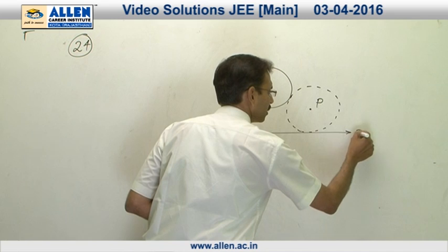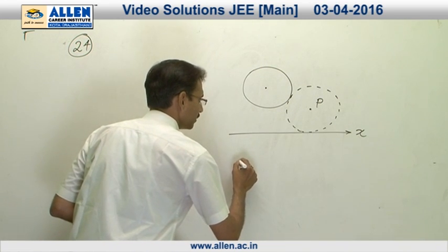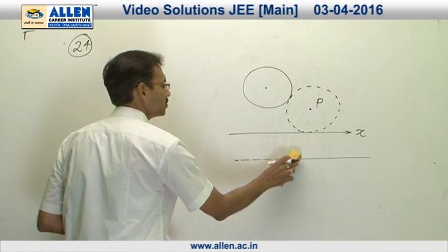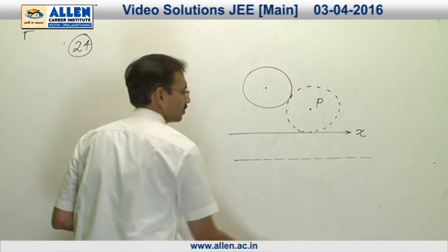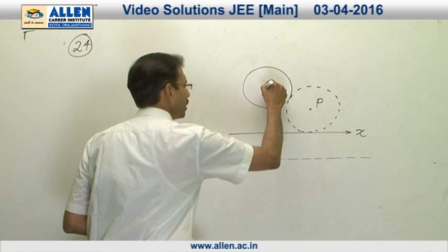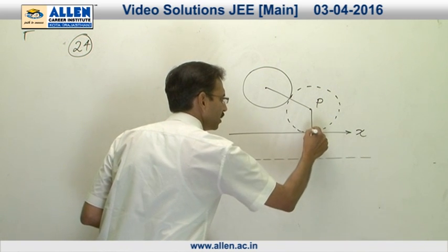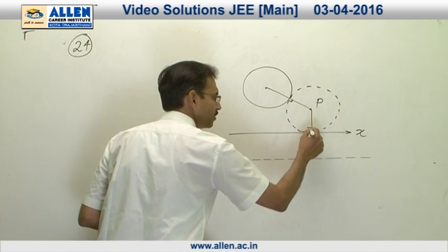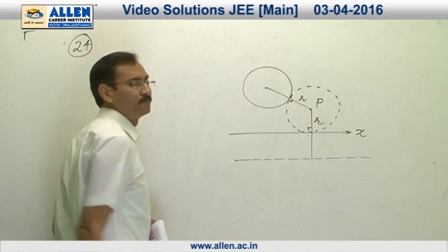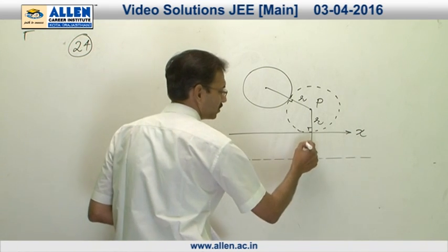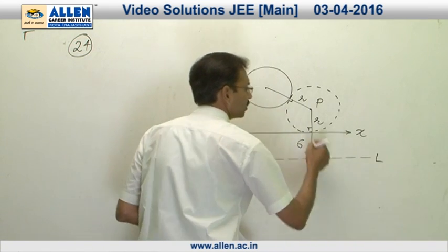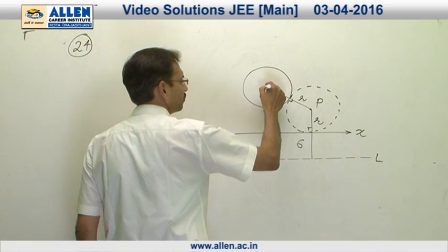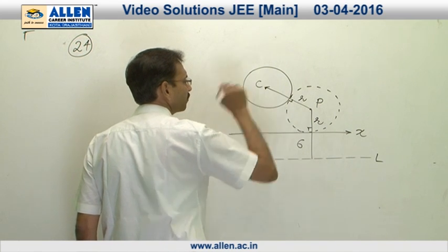Let us consider one more line — a line which is at 6 units distance from the x-axis, below the x-axis. The reason for choosing 6 is simple: the distance of P from the x-axis is r. If I consider this line l, the distance of P from this fixed line l will be r plus 6, which is the same as its distance from the center of the given circle.